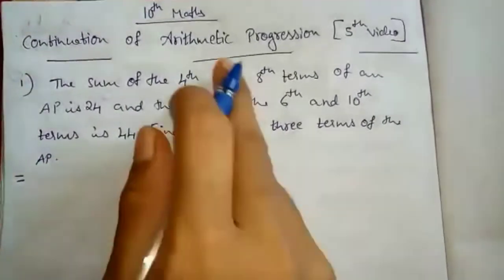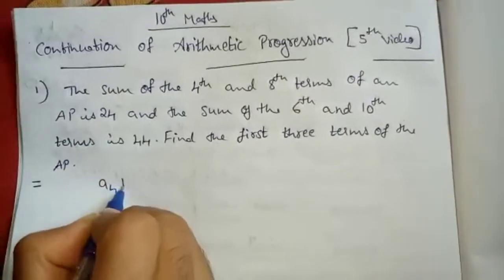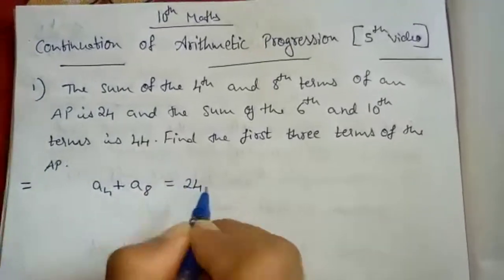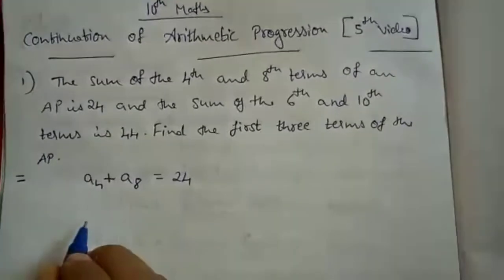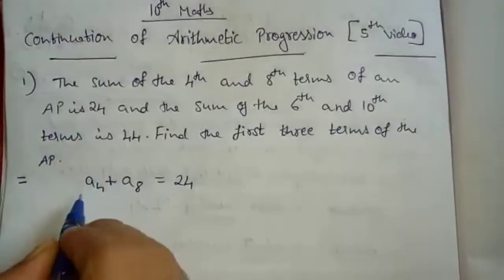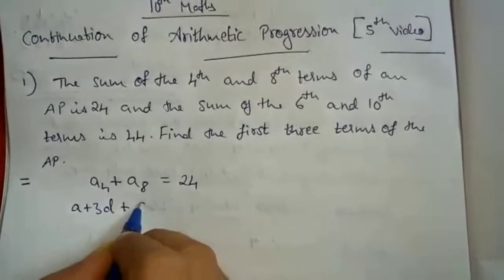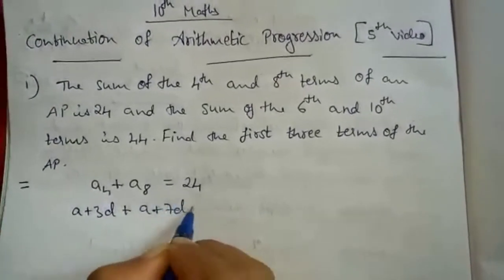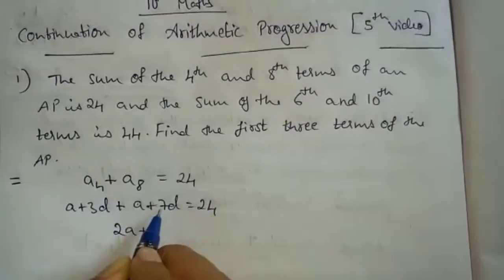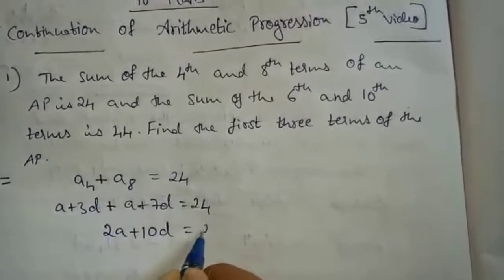What is given: 4th and 8th term. 4th term means A4. So A4 plus A8 is equals to 24. Now elaborate: A4 means A plus 3D, and A8 means A plus 7D, equals to 24. So it becomes 2A plus 10D equals to 24.